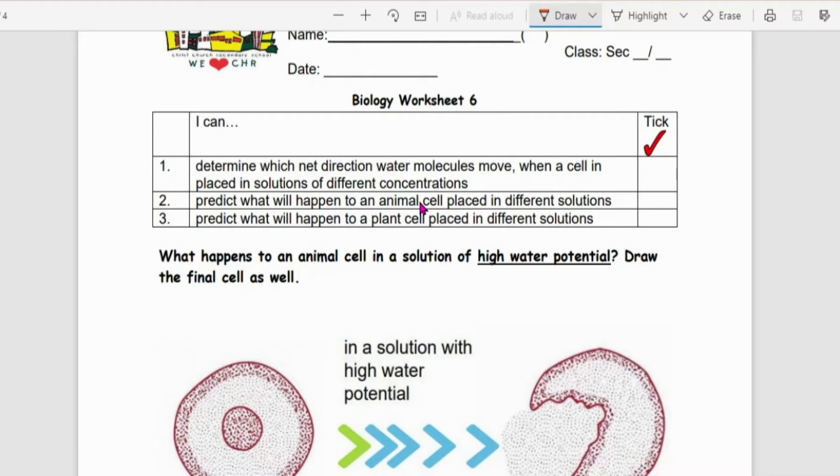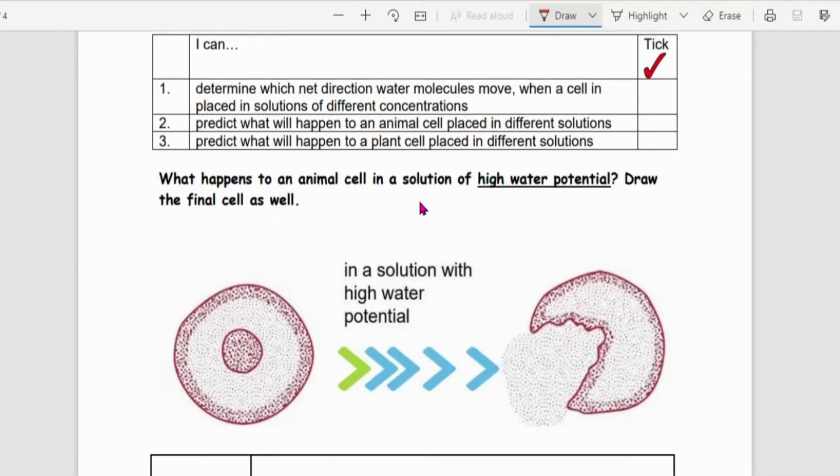So what happens to an animal cell in a solution of high water potential? Draw it. So let's draw something like this. So what you would typically draw is something like this with the contents leaking out. So this is a very simplified version of this.